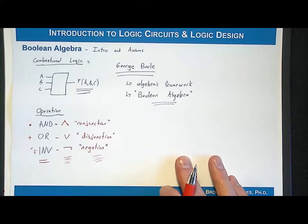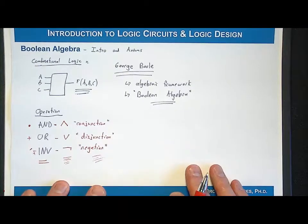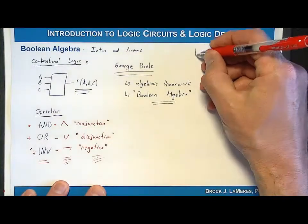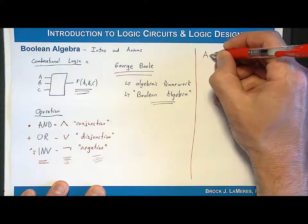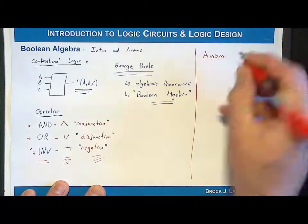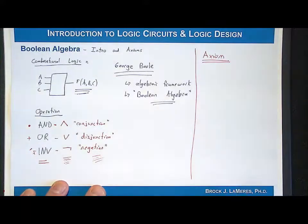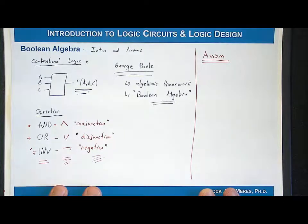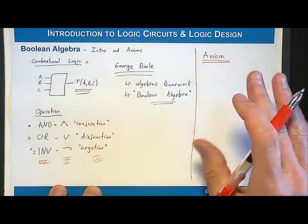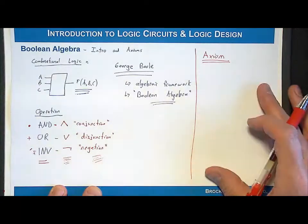Now let's begin by looking at the axioms within a Boolean algebraic system. An axiom is a truth that is so simple it does not need to be proved. This is different from a theorem, which has to be proved before you can accept it as fact. Before you can get to a theorem, you have to have some basic truths about the system. There is a set of five axioms used within Boolean algebra.